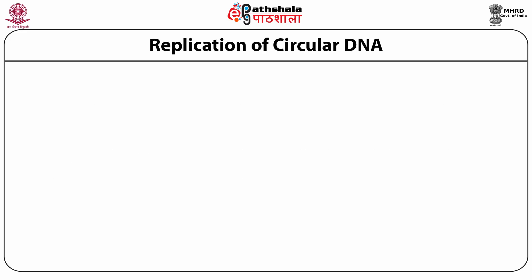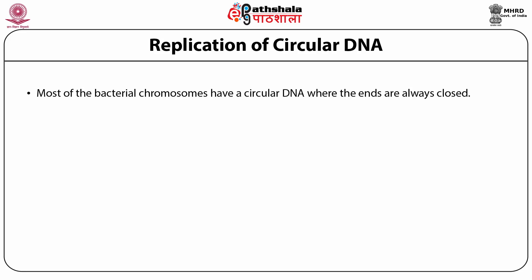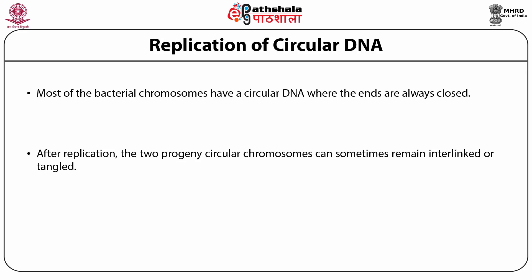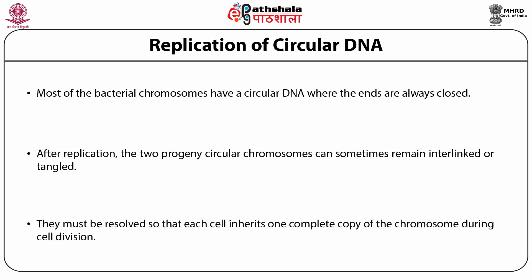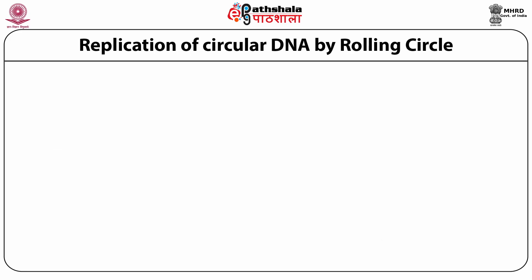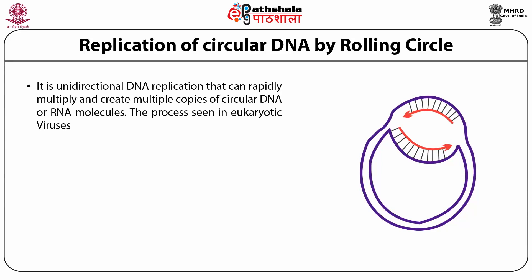How does replication of circular DNA take place? Most bacterial chromosomes have circular DNA where the ends are always closed. After replication, the progeny circular chromosomes can sometimes remain interlinked or tangled and must be resolved so that each cell inherits one complete copy of the chromosome during cell division. Replication of circular DNA by rolling circle is a unidirectional DNA replication that can rapidly multiply and create multiple copies of circular DNA or RNA molecules.